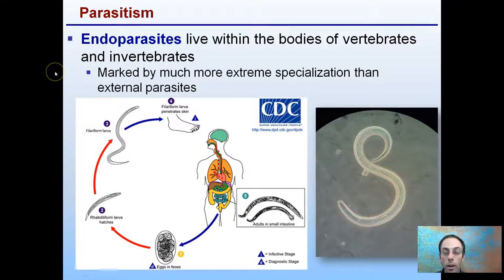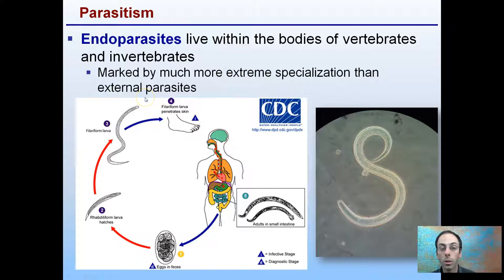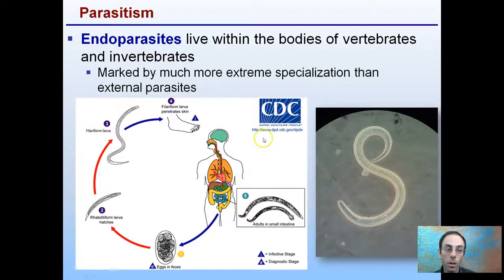In contrast, there's something called endoparasites, and these live within the bodies of vertebrates and invertebrates, marked by much more extreme specialization than external parasites. You need a parasite that can specifically live inside you in your specific body system. These are endoparasites living within the bodies — inside. 'Endo' meaning 'in.'